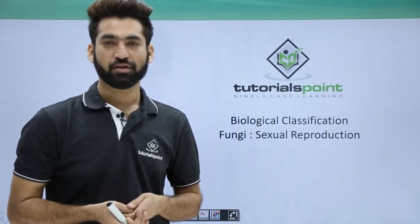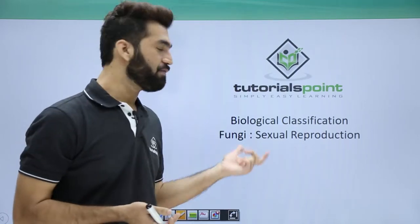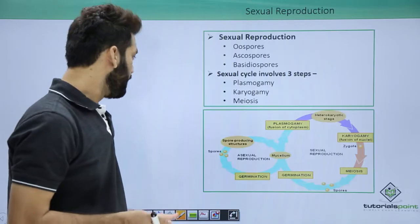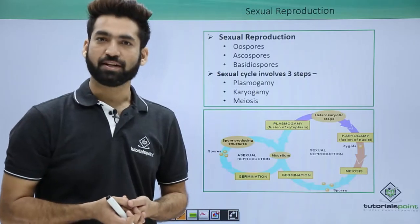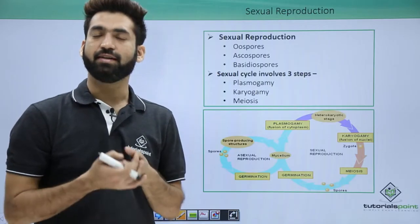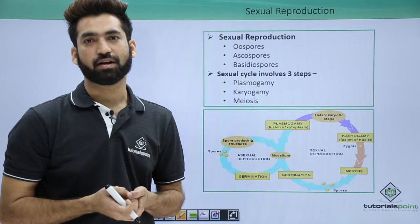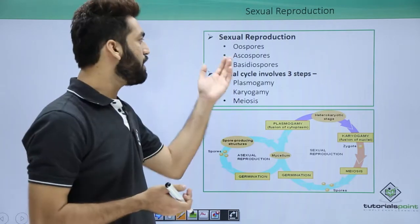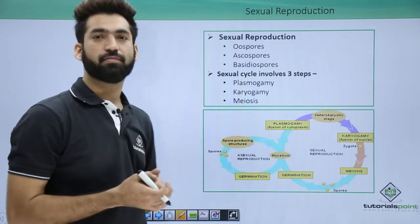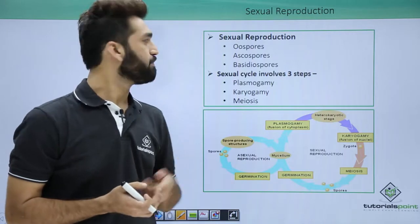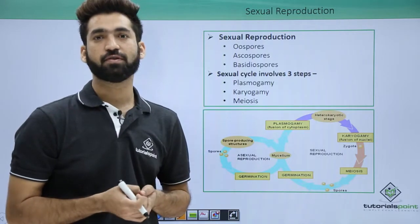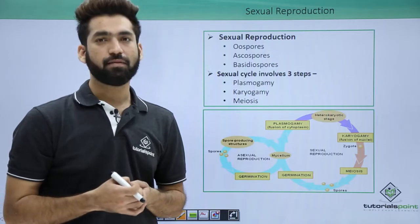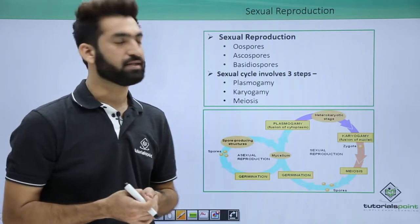This section details different sexual reproduction methods in fungi. When fungi undergo sexual reproduction, it involves the formation of spores. The spores formed during sexual reproduction of fungi are basidiospores, ascospores, and zygospores.